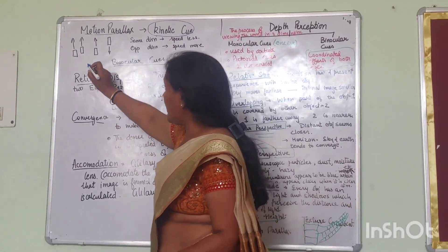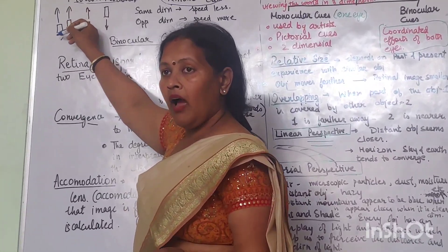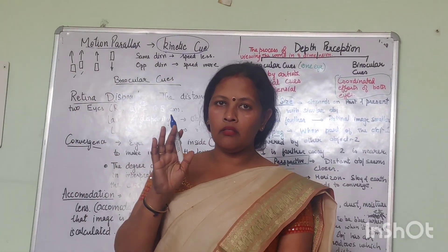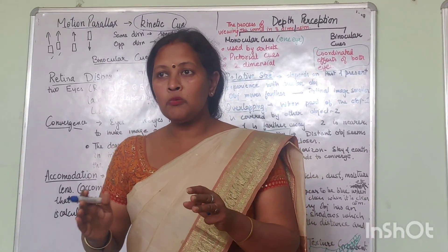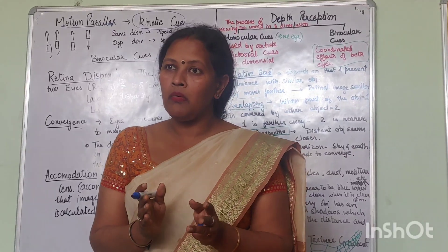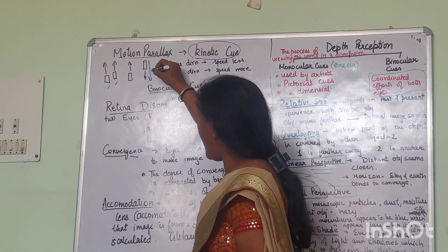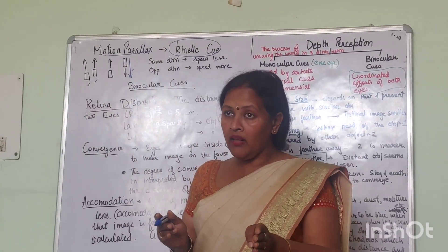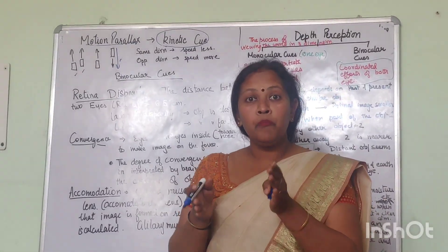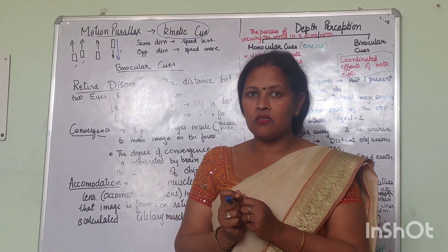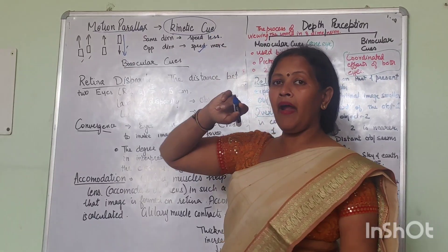If there are two cars going in the same direction and we are sitting in one car, the other car looks slower because we compare our speed with its speed. But when cars come from the opposite direction, our speed and its speed add up, so it looks faster. This is motion parallax.